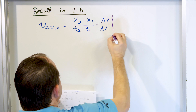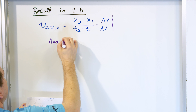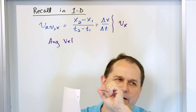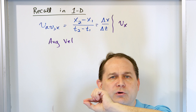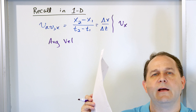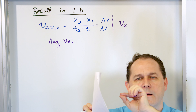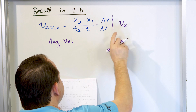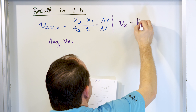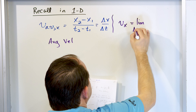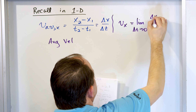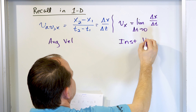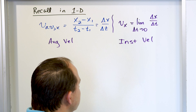We learned that this was called average velocity. Then we learned that the instantaneous velocity — the average velocity is what's happening between two points; you know, some particle flies from here along a curved path to some final destination — the average just takes into account the endpoints, position 1 and position 2 along the x direction, divided by the time. But we also have this idea of instantaneous velocity, which we wrote as the limit as delta t goes to zero of delta x over delta t.